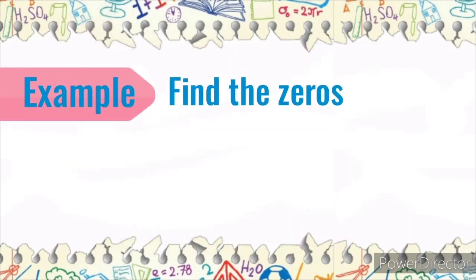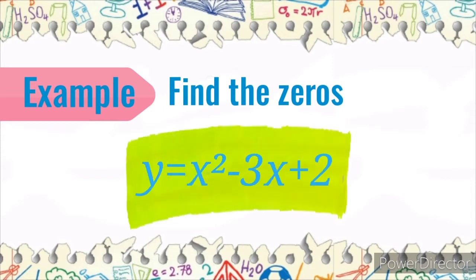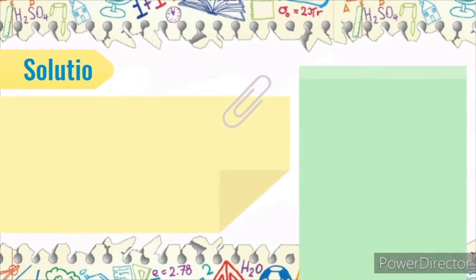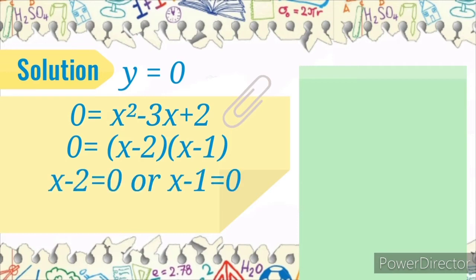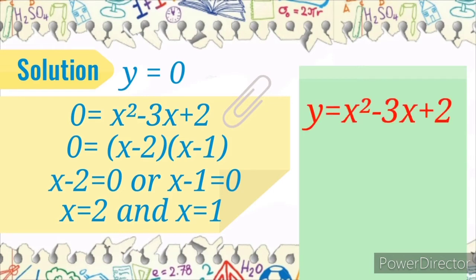Example: Find the zeros of the quadratic function y is equal to x squared minus 3x plus 2 by factoring method. Solution: Set y is equal to 0. Thus, 0 is equal to x squared minus 3x plus 2. Factoring: 0 is equal to x minus 2 times x minus 1. Then x minus 2 equals 0 or x minus 1 equals 0, giving x is equal to 2 and x is equal to 1. The zeros of y = x² - 3x + 2 are 2 and 1.